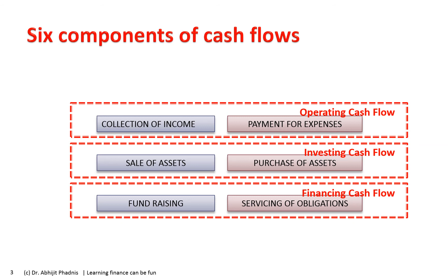The left-side items are inflows — in arithmetic terms, a plus, because money is deposited into our bank account. The right-side items are outflows — a minus, because money goes out. These same principles apply in personal life as well. In our personal lives we also have operating cash flow, investing cash flow, and financing cash flow. There's a clear parallel between what happens in business life and personal life.